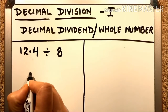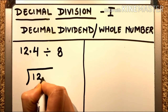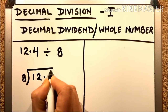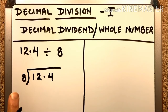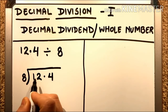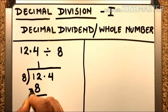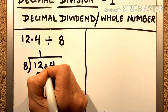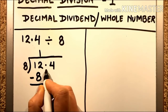What we do is put the decimal in the quotient just above the decimal point in the dividend. We write it as 12.4 divided by 8. First, we compare the leftmost digit: 1 is less than 8, so we combine to get 12. 12 is greater than 8, so 8 ones are 8. Subtract: 12 minus 8 equals 4. The decimal point is noted in its place.